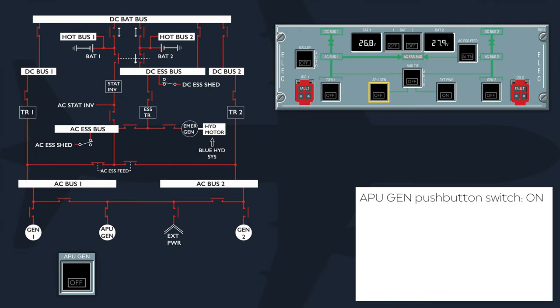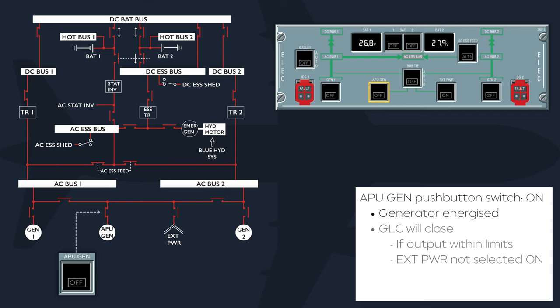With the APU generator push button switch in its normal on, lights-out position, the generator is energized and the generator line contactor will close if the generator parameters are normal and external power is not selected on. The APU will not supply an electrical system that is powered by an engine-driven generator, as engine generators have priority over the APU generator.